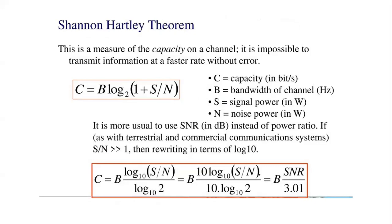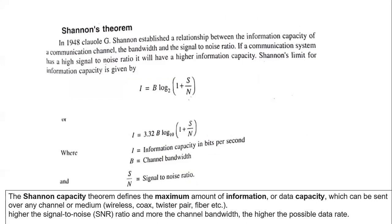Shannon's theorem states: I = B × log₂(1 + S/N), which we convert to I = 3.32 × B × log₁₀(1 + S/N), where I is information capacity in bits per second, B is channel bandwidth, and S/N is the signal-to-noise ratio. The entire aim of the Shannon-Hartley theorem is to send maximum data within a given bandwidth with minimum noise, so that the information channel capacity is maximized.